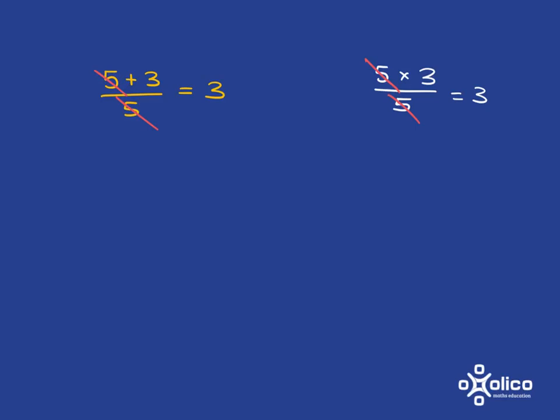Okay, hopefully you had a look at this and said 5 plus 3 over 5, that is 8 over 5. And 8 over 5 is certainly not the same as 3. So what the learner did here is wrong. You can't do that. And the important point to note is that you've got a plus sign there.